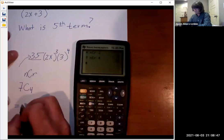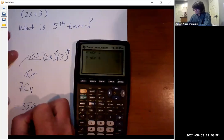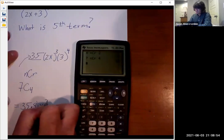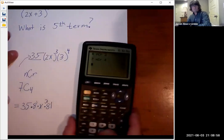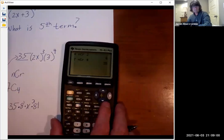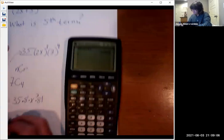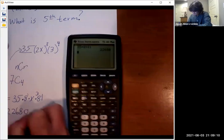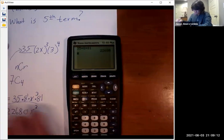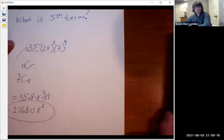35, 2³ is 8 and then x³. Then 3⁴ is 81. So you got to do all that, but watch this: 35 times 8 times 81 is 22,680x³. And so that is your fifth term. That's your fifth term.